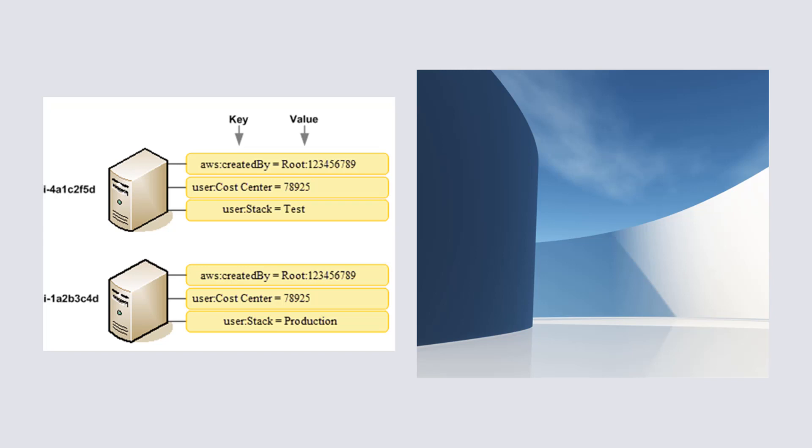In this example diagram, you have assigned and activated tags on two Amazon EC2 instances — one tag called Cost Center and another tag called Stack. Each tag has an associated value. You can also activate the AWS-generated tags, such as the Created By tag, before creating these resources. The Created By tag tracks who created the resource. User-defined tags use the 'user:' prefix and AWS-generated tags use the 'aws:' prefix — very simple but very effective.